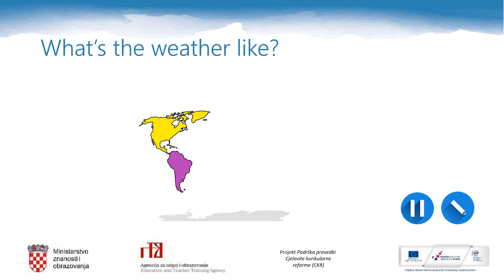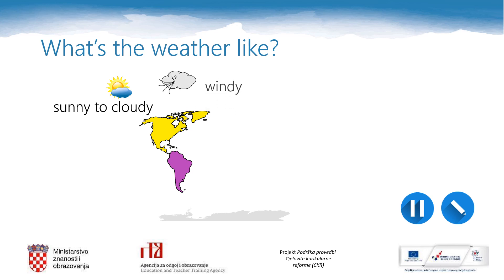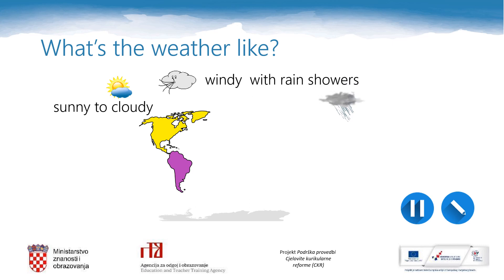What's the weather like there? In this picture we can see the sun and a cloud, so the weather is sunny to cloudy. It can be just windy, or it can be windy with rain showers. This is thunder.